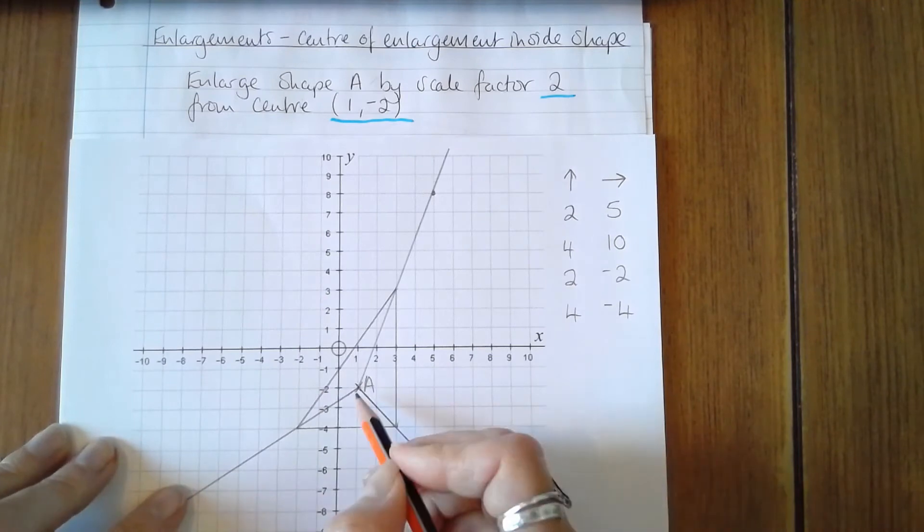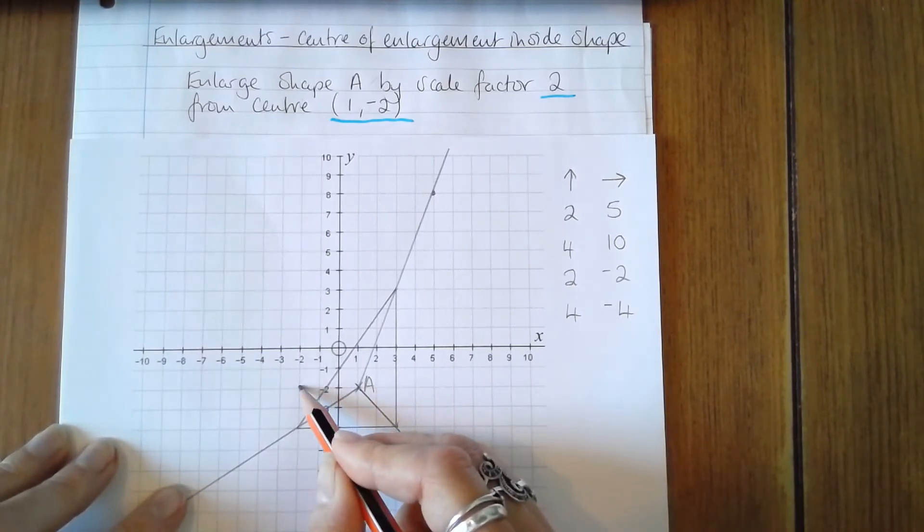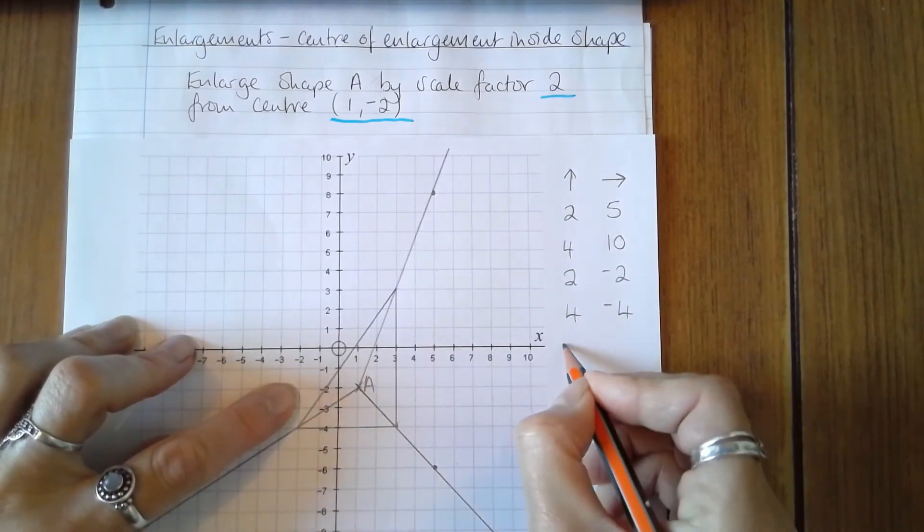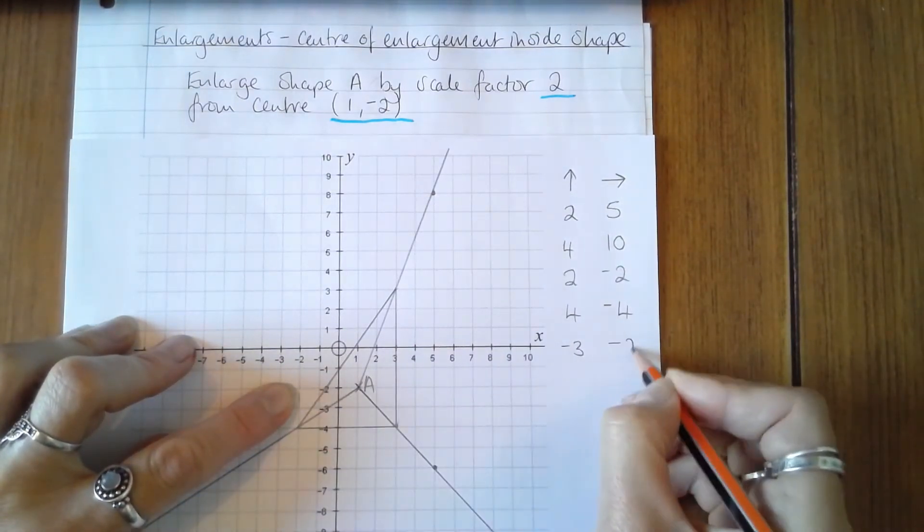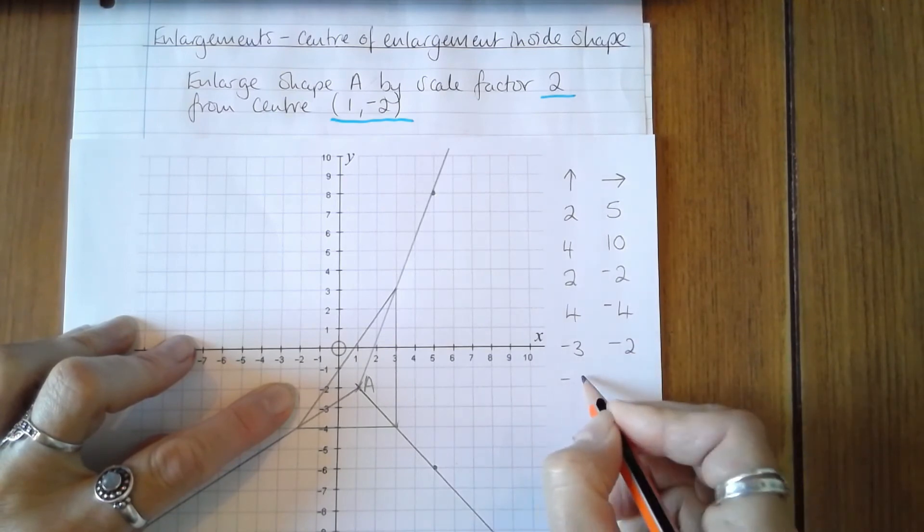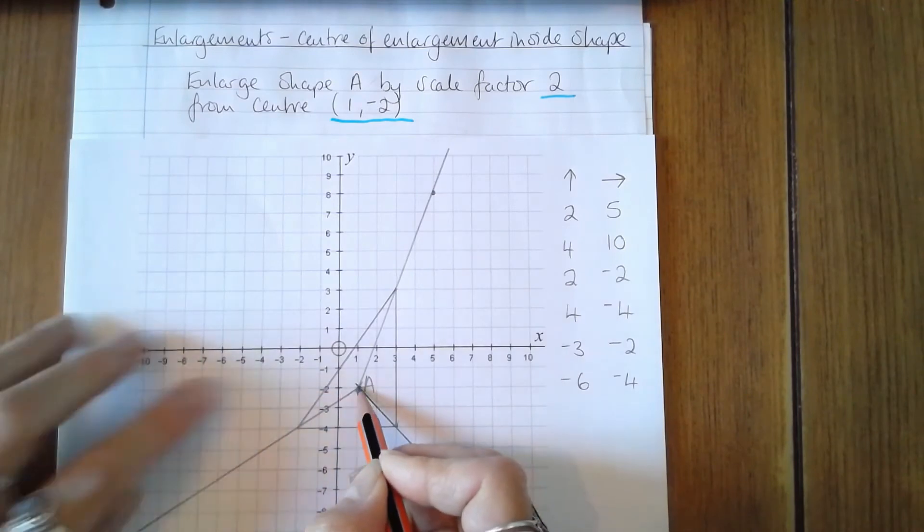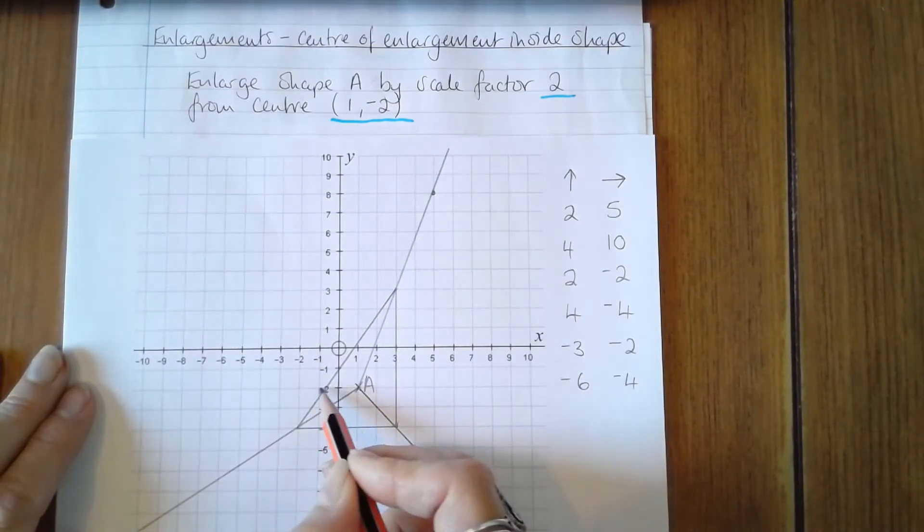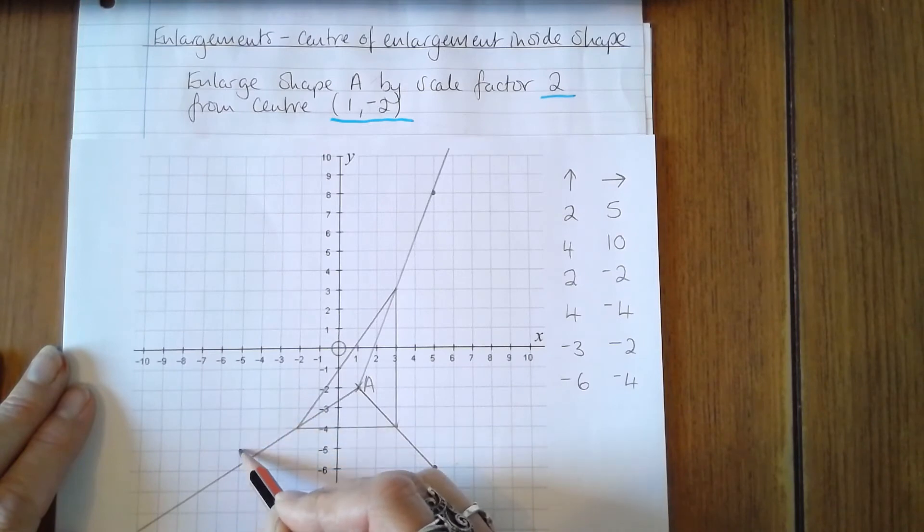And the last one is 1, 2, 3 to the left, so that's negative 3, and 2 down, that's negative 2. Multiplying both of those by 2 becomes negative 6 and negative 4. So now I count 1, 2, 3, 4, 5, 6, and 1, 2, 3, 4.